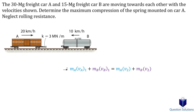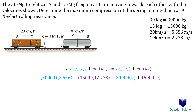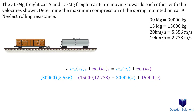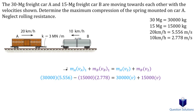We will assume movement to the right to be positive. So we have the mass of car A multiplied by the initial velocity of car A, plus the mass of car B multiplied by the initial velocity of car B — this is negative because it's traveling the opposite way. That equals the mass of car A and car B multiplied by the final velocity. Once the cars collide, they are attached and travel with the same velocity.